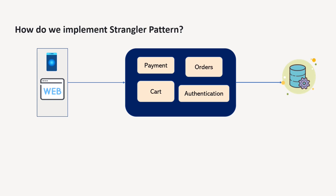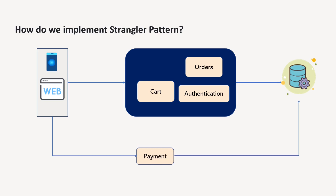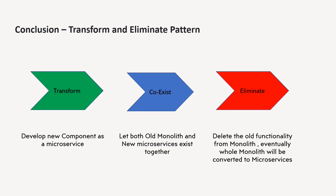The first step is to identify which functionality can work incrementally. Suppose you want to have a payment service carved out from the monolithic application. You will remove the payment functionality from the monolithic application and create a separate payment microservice. This microservice will interact with the database. Both the monolithic application and the separate payment microservice will exist together. Whenever the monolithic application needs payment services, it's going to call this payment service.